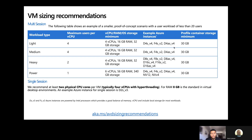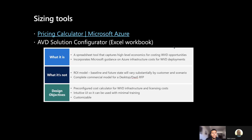For single sessions, we recommend two physical CPU cores per VM — typically four vCPUs with hyperthreading. In terms of RAM, the standard is 8 GB for virtual environments, though you can go above that. For sizing tools, consider the pricing calculator as well as the Azure Virtual Desktop Solution Configurator Excel Workbook. We recommend asking your partner manager or Microsoft account manager about these. The Azure Pricing Calculator may be the quickest way to estimate your sizing and pricing.